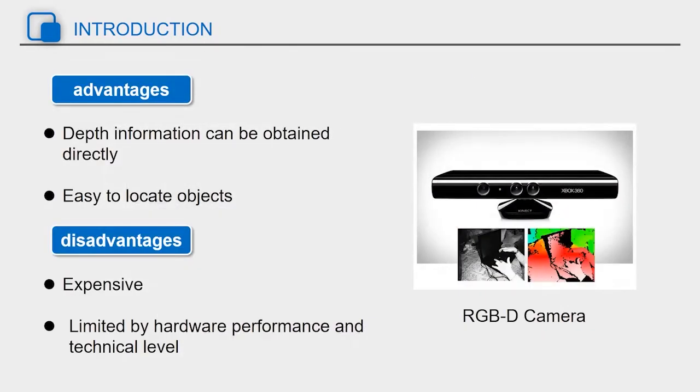RGBD cameras can directly obtain the depth information of the object, which is convenient for object location, but it is much more expensive than the RGB camera. And the hardware performance and technique level of RGBD cameras will seriously restrict its practical application effect.